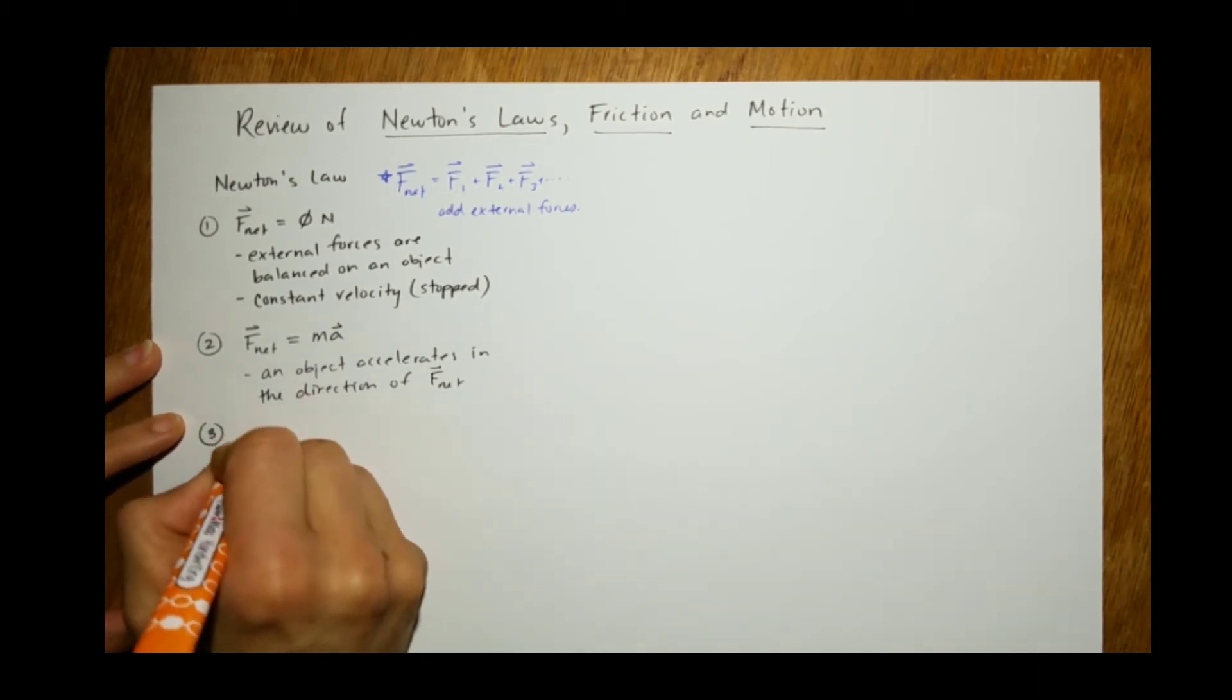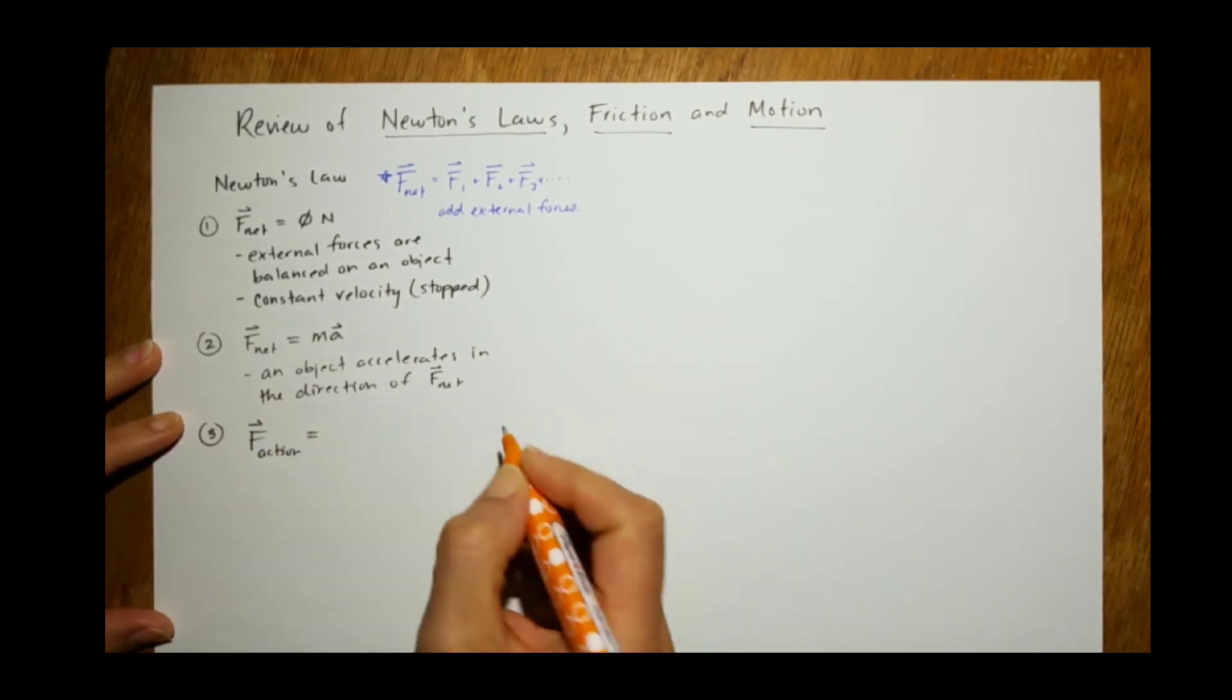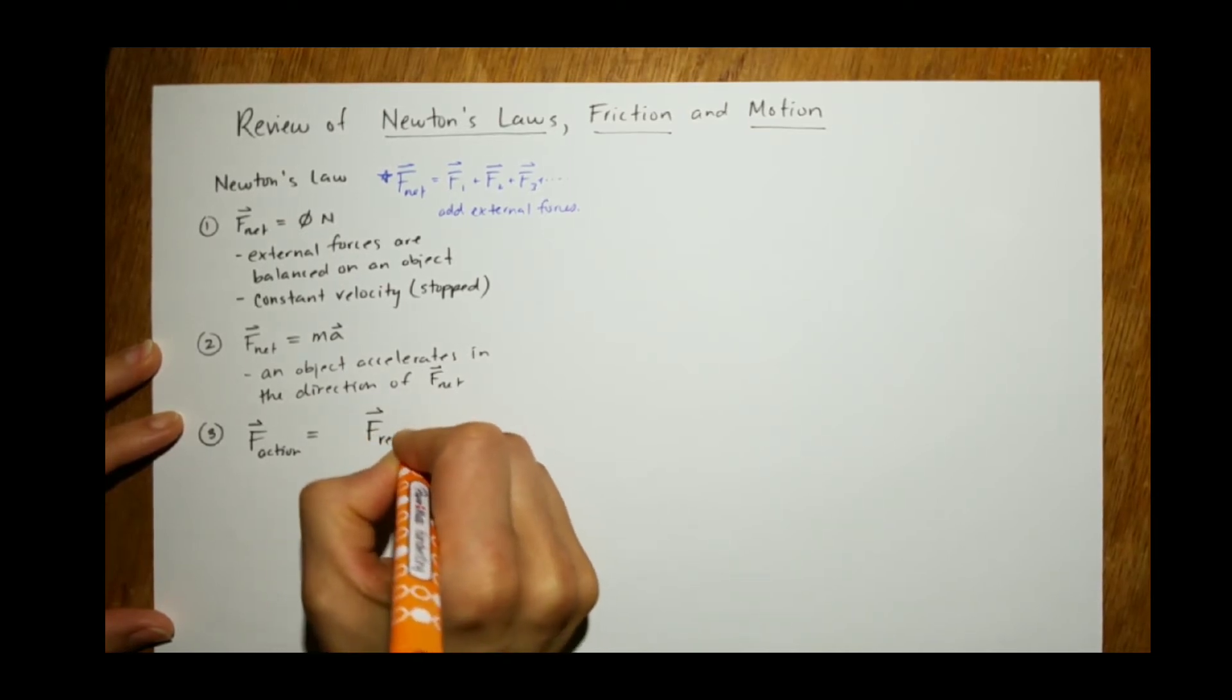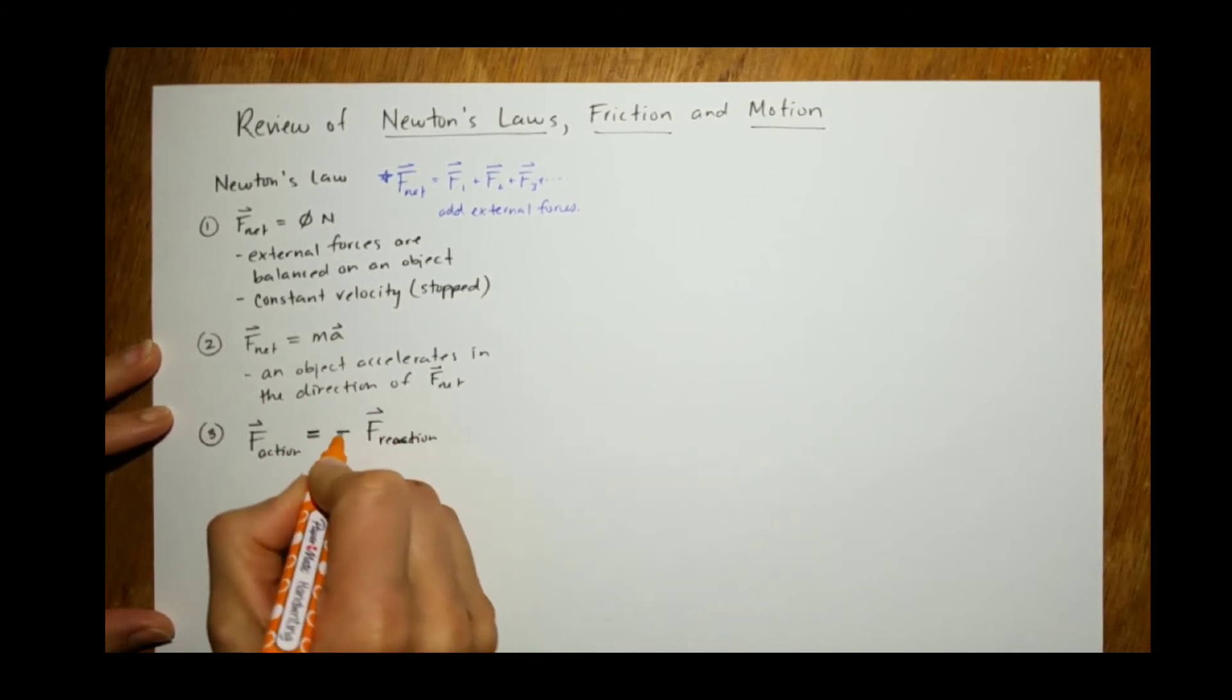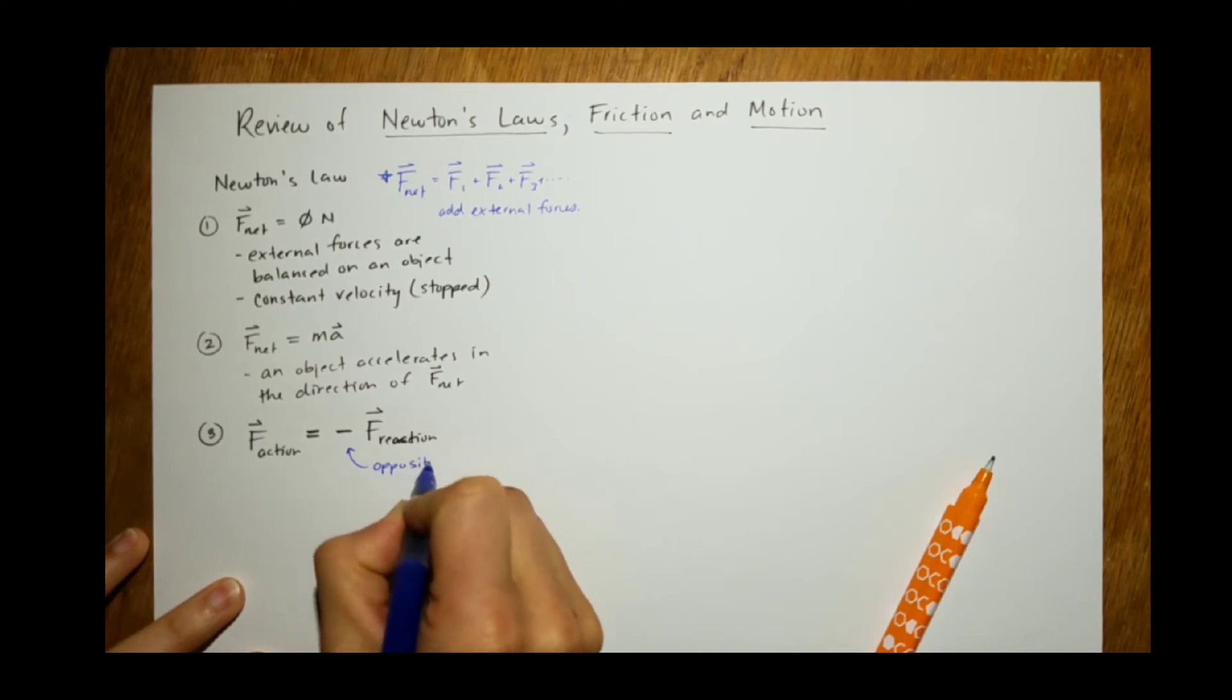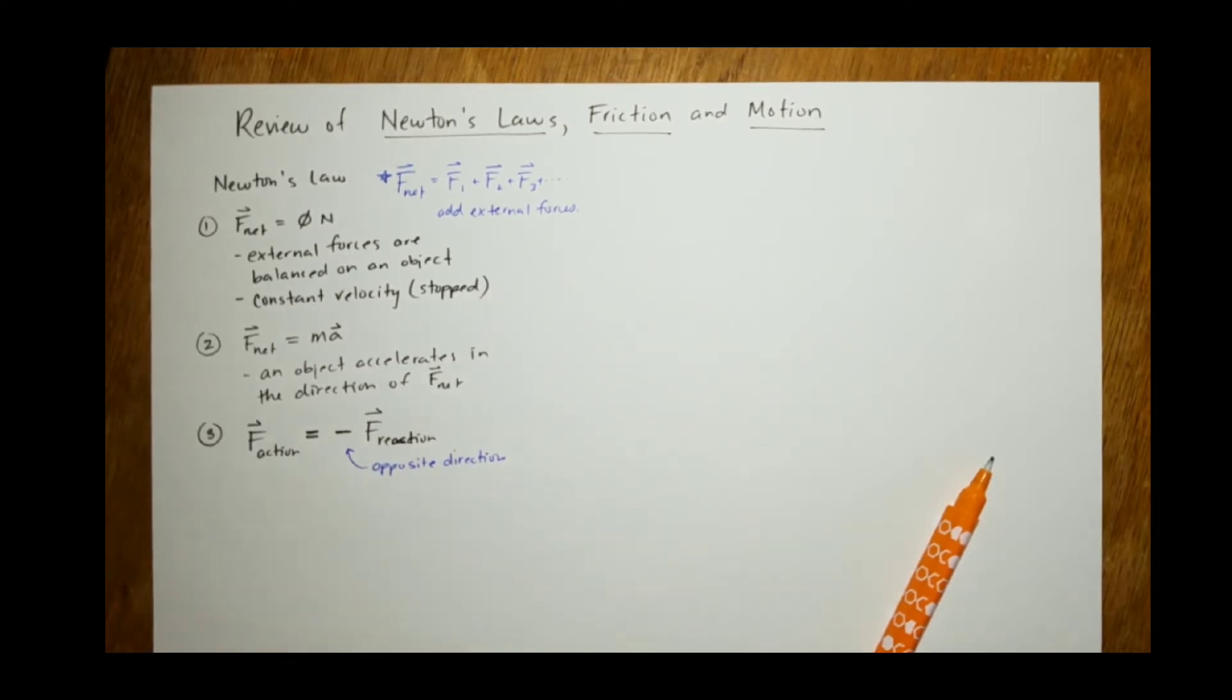Now, the third one is that for every action force, there exists a reaction force. That is equal in magnitude, but opposite in direction. And that's where the negative sign comes in. Again, this is the opposite direction. And the equal means exactly what it means. Equal.